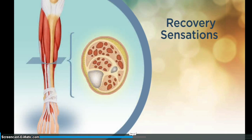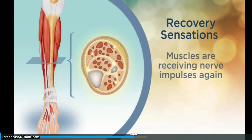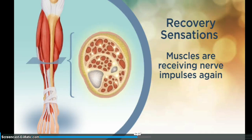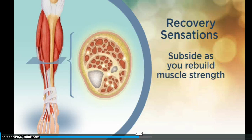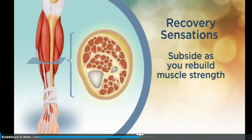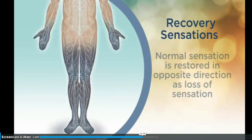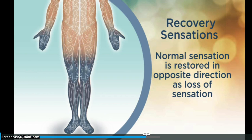This may be an indication that weakened areas within the muscles are now receiving nerve impulses and can begin to work again. The body is also adjusting as muscles become active and begin to function more normally. These sensations subside as patients rebuild their muscle strength through progressive physical activity. As you know, more normal sensation is restored in the opposite direction as loss of sensation. So if peripheral neuropathy symptoms began in your toes and progressed to your knees, more normal sensation is restored to your knees, then to your legs, ankles, tops of your feet, over the ends of your toes to the balls of your feet.